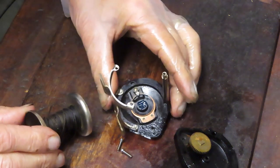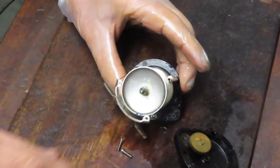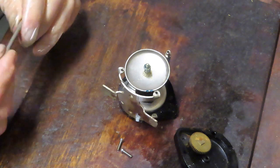Monofilament's cheap, get rid of it. It tends to stretch, it tends to have ultraviolet damage which weakens it. You just don't need to lose the big fish because of it.